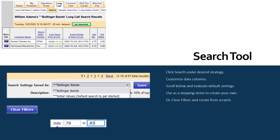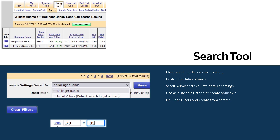The patented search tool on Power Options is available for all 23-plus strategies that we support. Simply click Search under your desired strategy. Customize the data columns based on your needs, scroll below the listed trades that come up, and evaluate the default settings. Use those criteria as a stepping stone — adjust or add criteria to meet your needs. Or clear all the filters and create a search from scratch, screening for various option criteria while also screening for stock technical and fundamental criteria.